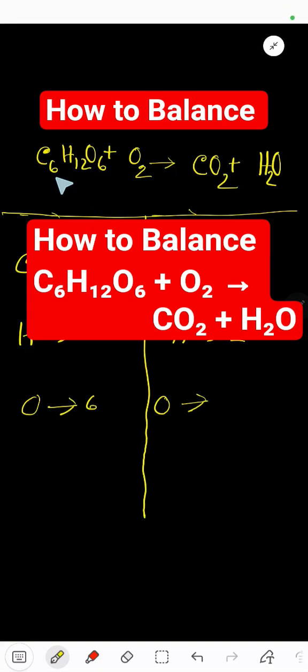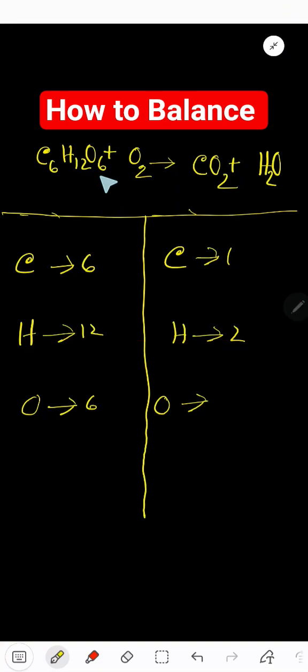To balance this combustion reaction of glucose plus oxygen that produces carbon dioxide and water. On the left hand side we have 6 carbon, 12 hydrogen, 6 oxygen.